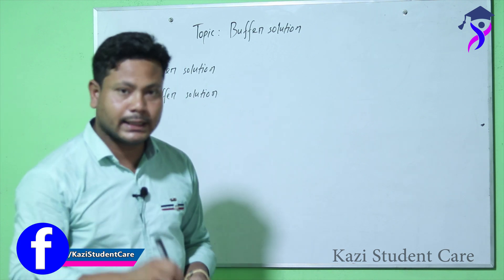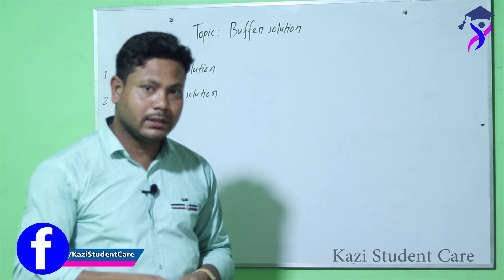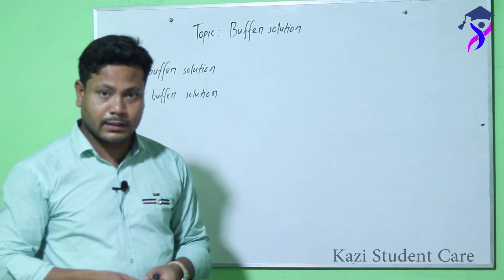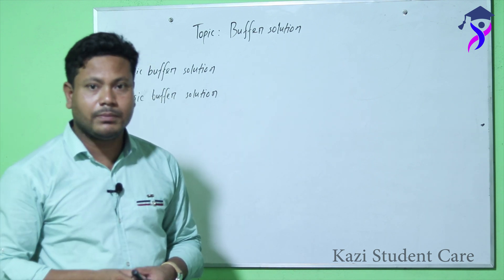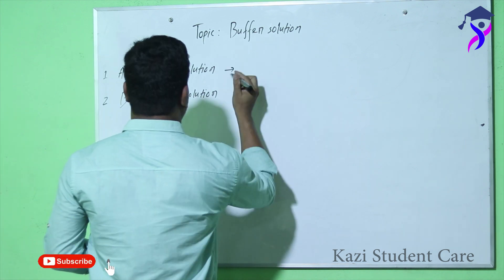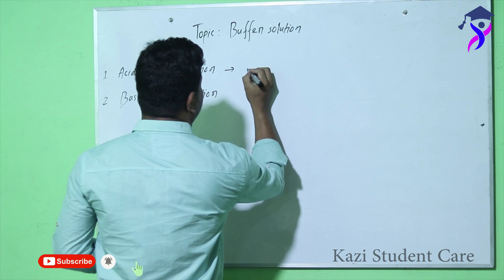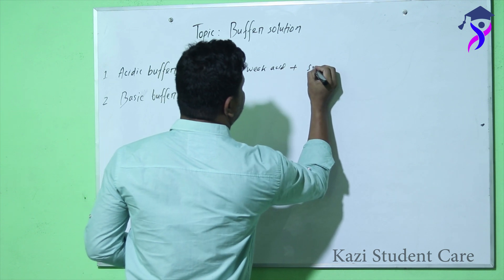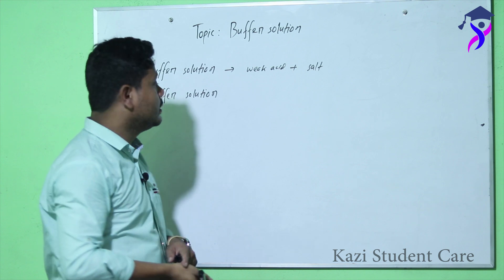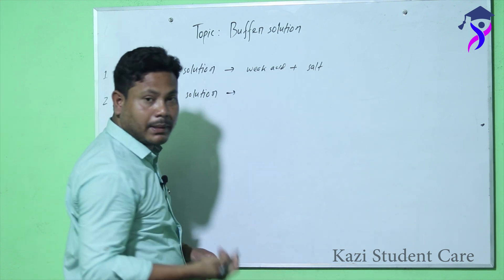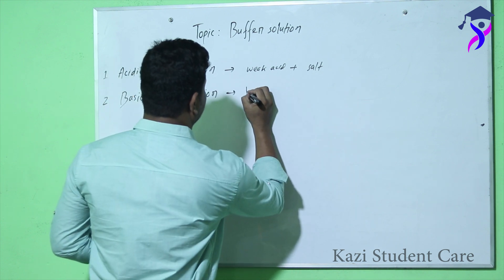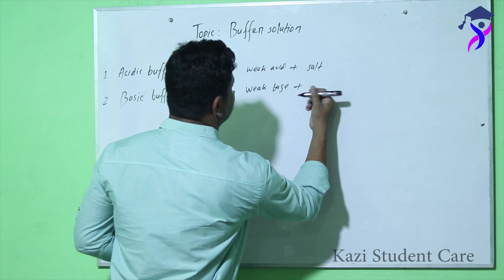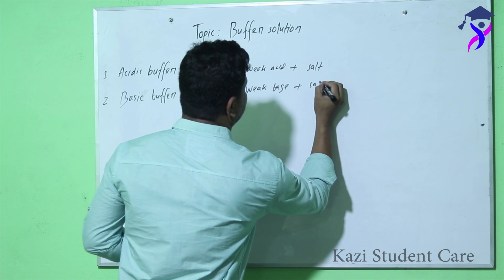There are two types of buffer solution: one is acidic buffer solution and the other is basic buffer solution. If you want to make an acidic buffer solution, you have to take a weak acid and a strong salt of the weak acid. If you want to make a basic buffer solution, you have to take a weak base and a strong salt of the weak base.